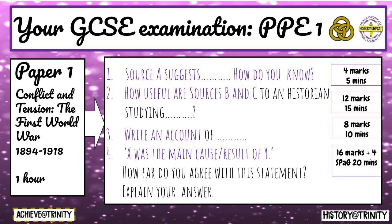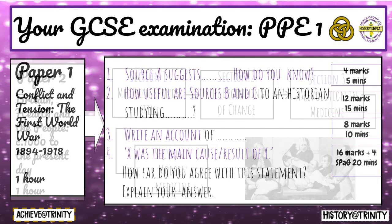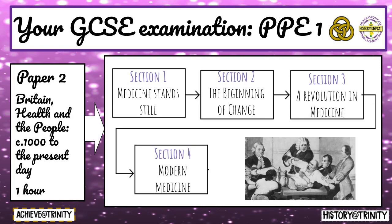Paper 2 will test students' knowledge and understanding of Britain Health and the People. The paper will ask questions from across the full unit, which spans over 1,000 years. Students must revise content from all four sections. Section 1 covers the medieval period and why medical progress stood still. Section 2 focuses on the Renaissance and limited medical progress. Section 3 covers the industrial period and a rapid revolution in medical progress. The final section examines medicine today.